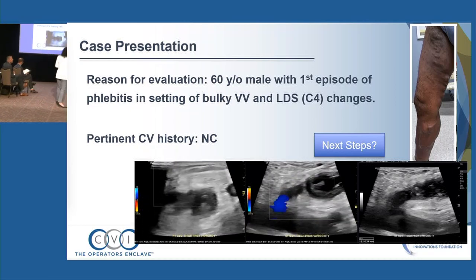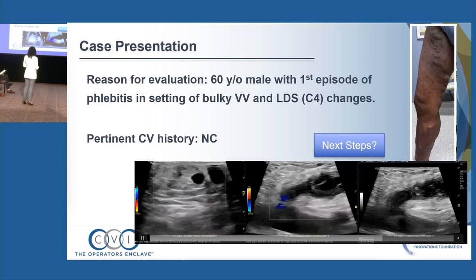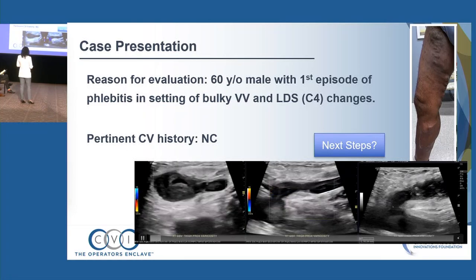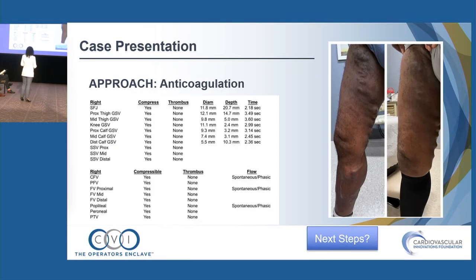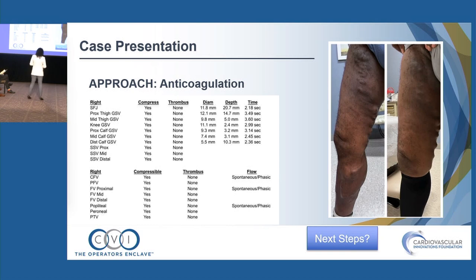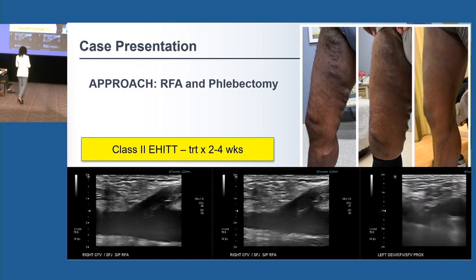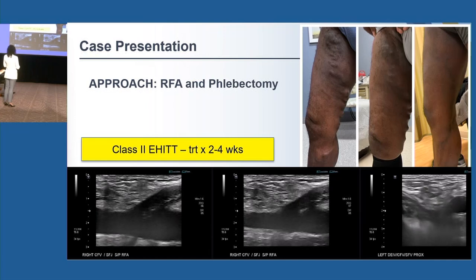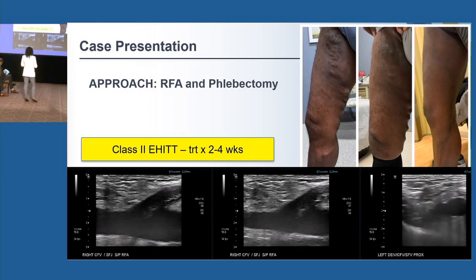Another case: a 60-year-old male with one episode of phlebitis in the setting of very bulky varicosities, lipodermatosclerotic changes with C4 disease at the ankle. It was hard to identify the GSV among many tributaries near the saphenofemoral junction. My approach was anticoagulation for a couple of months to allow inflammation and thrombus to resolve. He underwent venous insufficiency study, and ultimately we offered RFA with phlebectomy. We had enough of a GSV stump to the saphenofemoral junction for concomitant phlebectomy; all the bulky veins were removed. He developed a small hematoma at the knee treated briefly and did well.